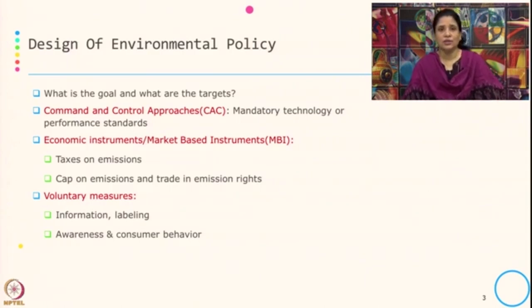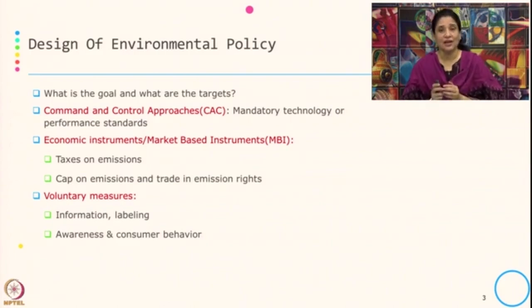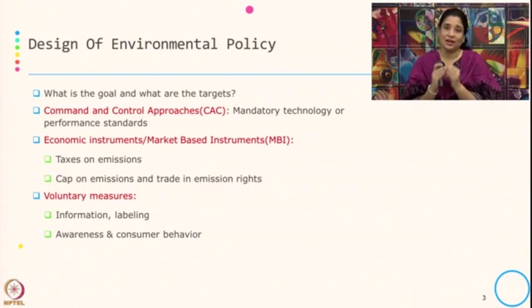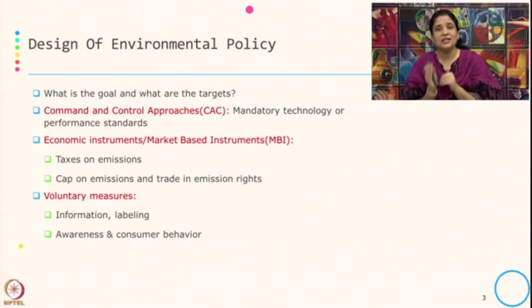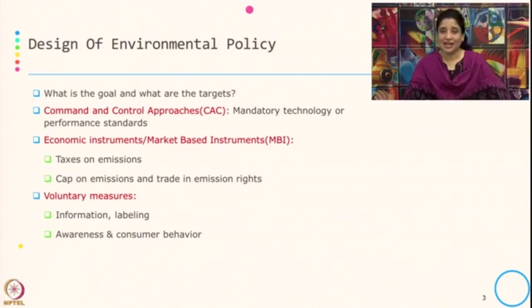What is a command and control approach? Under this approach, mandatory technology or performance standards are given by the regulators. When we say mandatory technology or mandatory standard, that is command. The second part is control, which means setting up a target — what has to be achieved — and second, monitoring and control of whether the targets are being met.